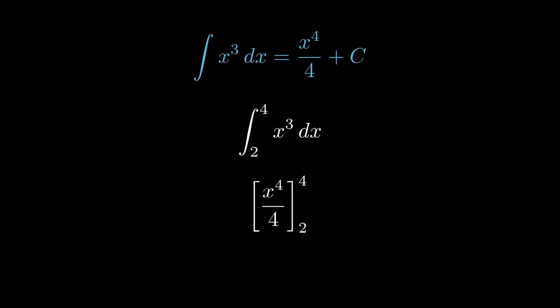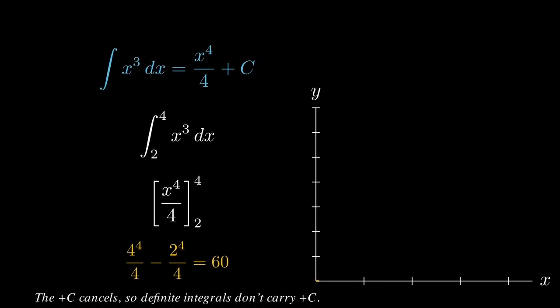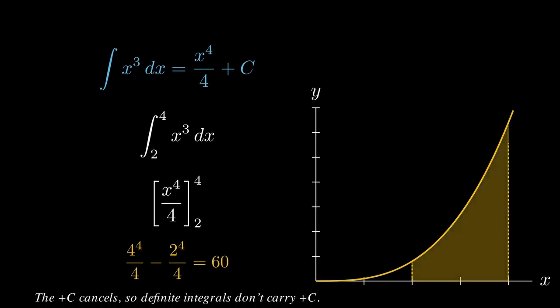So, if we integrate this first, we get x to the 4 over 4 between 4 and 2. Let's evaluate at the ends and then subtract. So, therefore, we get 4 to the power of 4 over 4 minus 2 to the power of 4 over 4. So, what does this give us all together? Well, that gives us 60. Now, where did the plus c go? Well, the plus c cancelled. It always cancels in a definite integral.